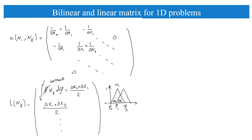The linear term l(N_j) is the integral over f times N_j. If we consider f constant and equal to one, this reduces to the integral over the basis function triangle, which equals (delta_x_{i-1} + delta_x_i) / 2. For the first term this gives (delta_x_0 + delta_x_1) / 2, and so on for subsequent nodes.